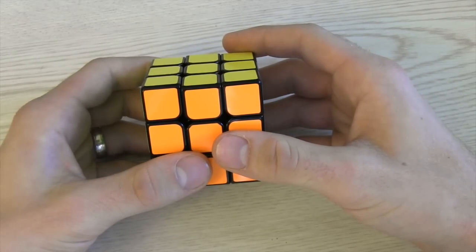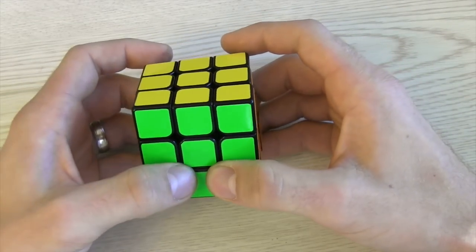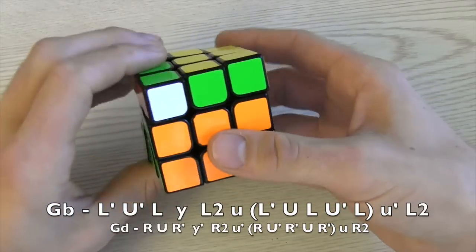Many people avoid doing a mirrored version of the algorithm because they say their left hand is slower. I feel that it's much easier to learn and after some time you'll get equally as proficient with both hands. So basically that is the exact same algorithm just mirrored.